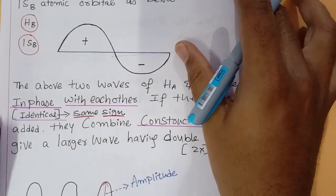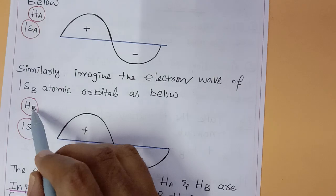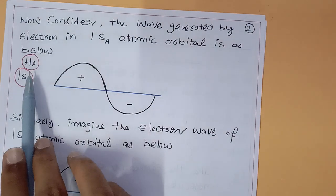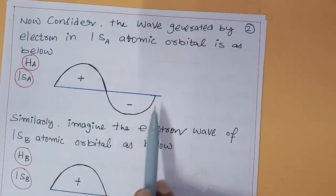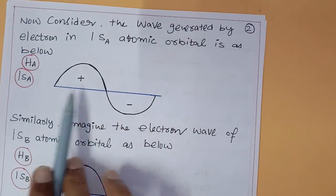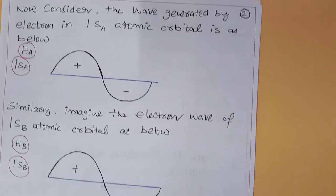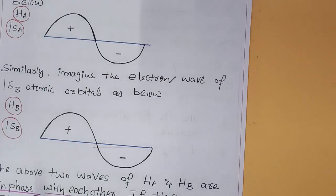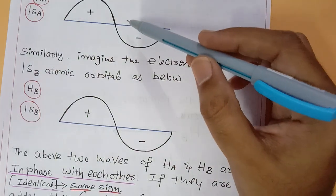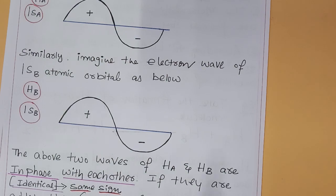Now, hydrogen atom A and hydrogen atom B together have 1 + 1, that is two electrons. The electron in hydrogen atom A behaves as a wave. Electronic waves have both wave and particle character. Wave A and Wave B are the same. The top has a plus sign and the bottom has a minus sign.